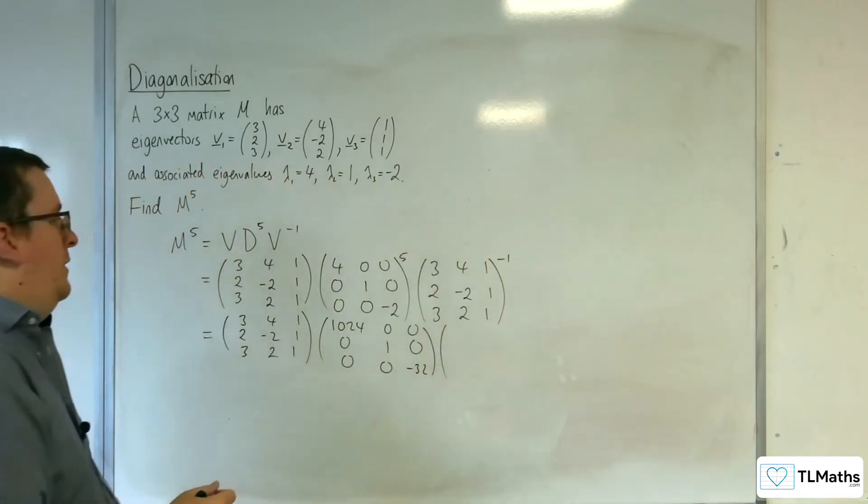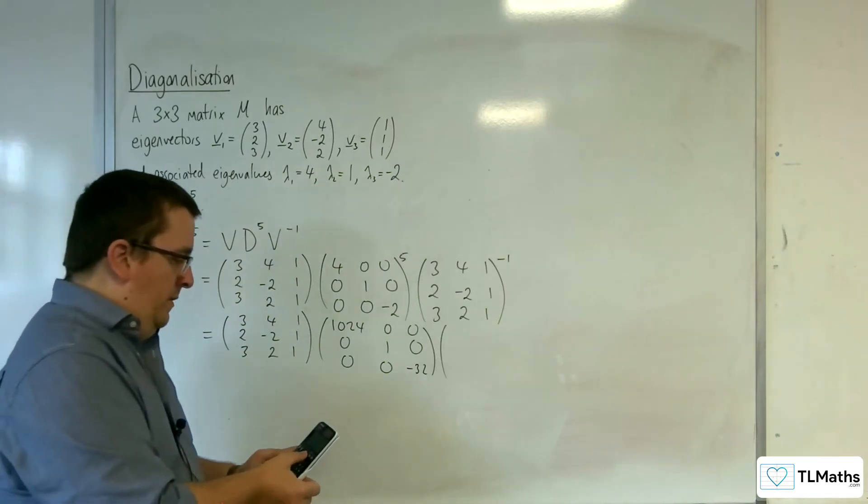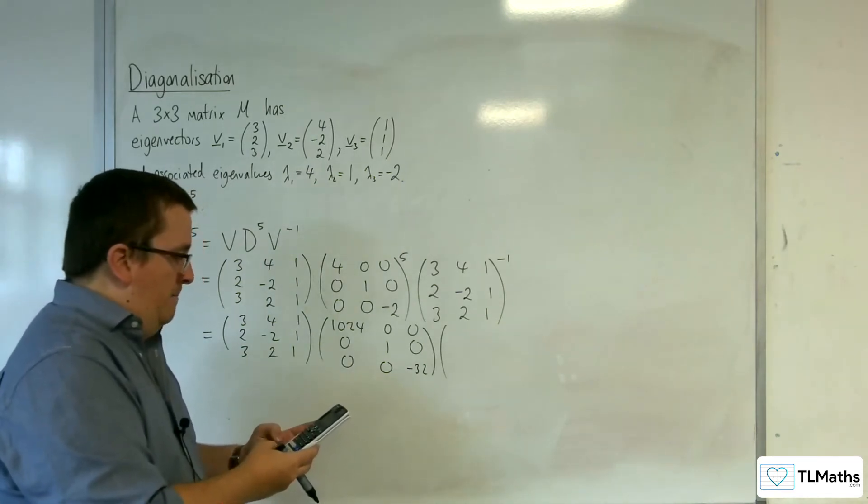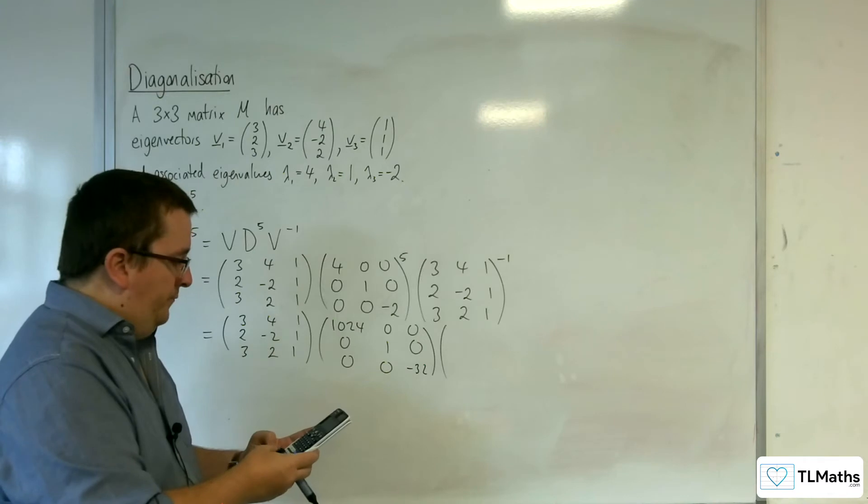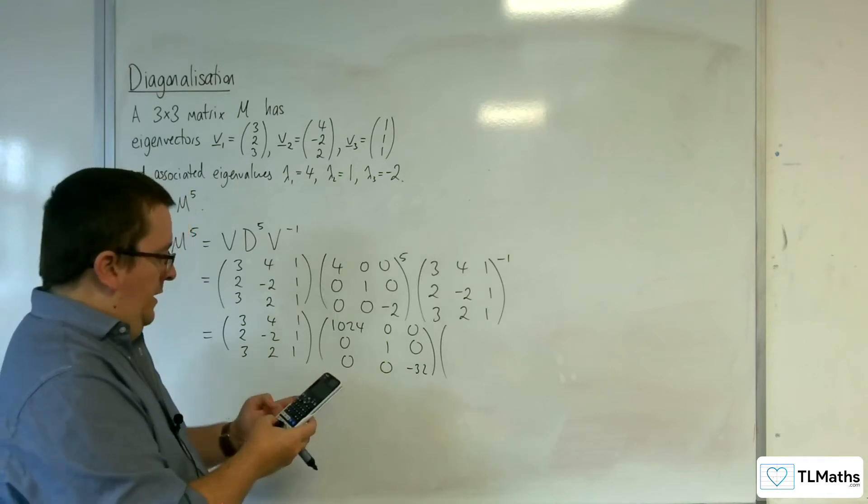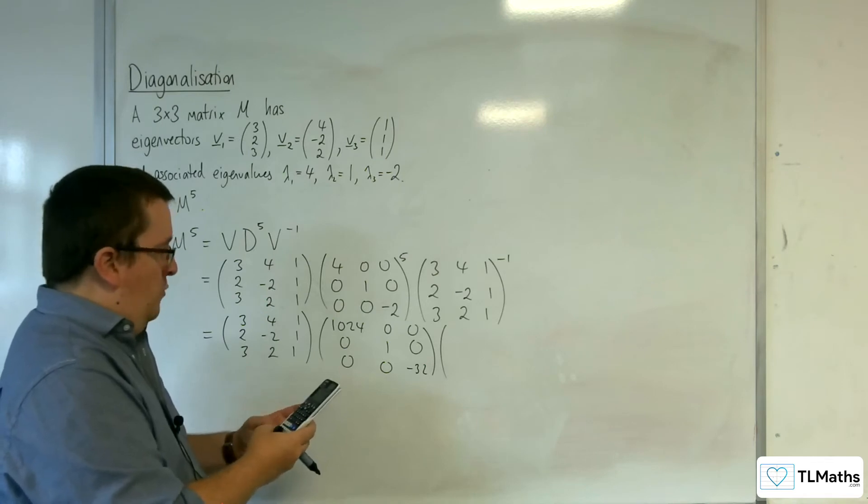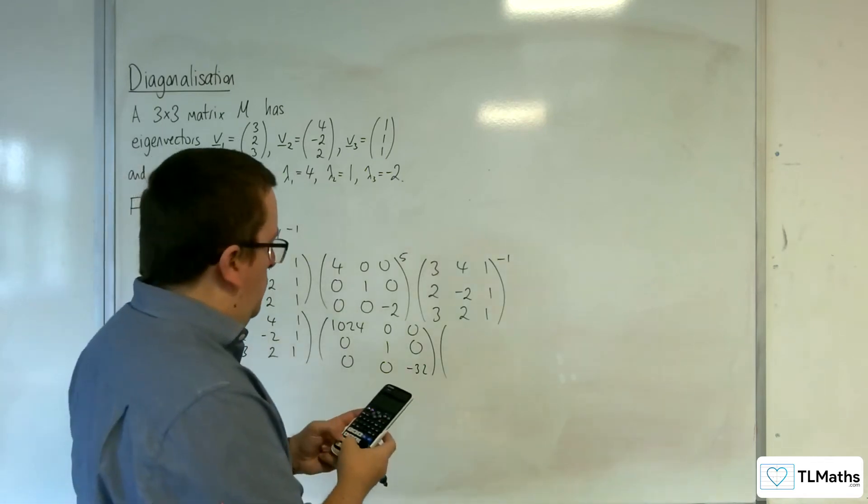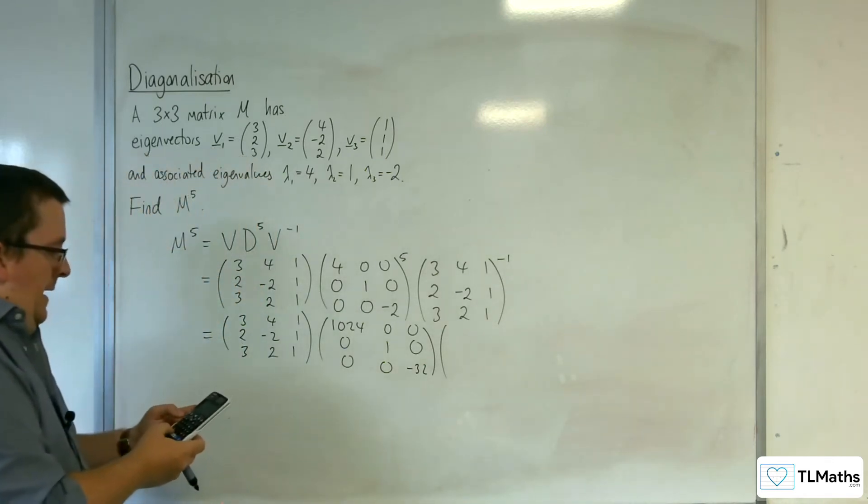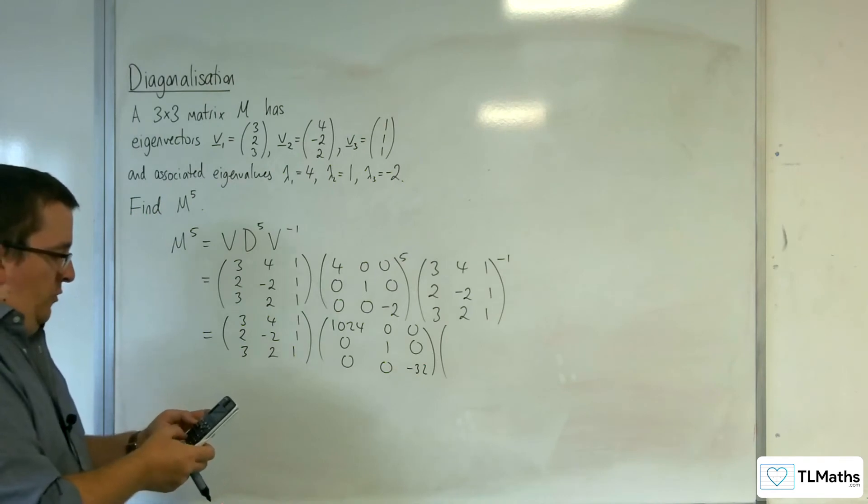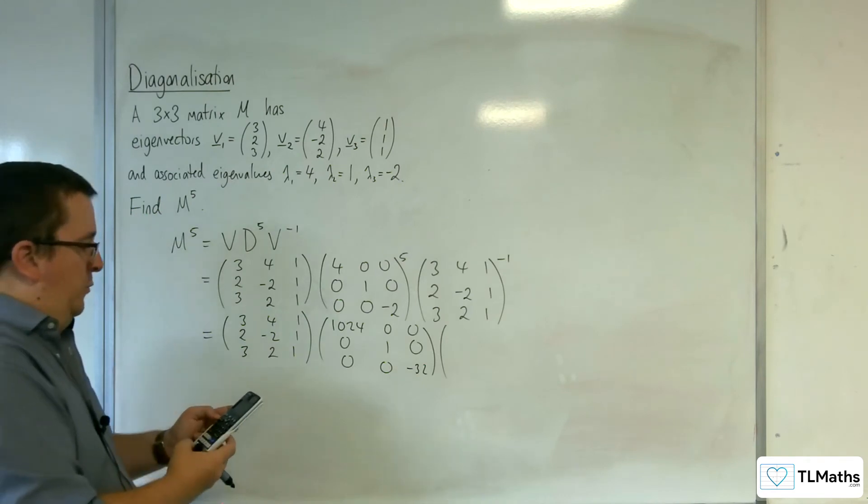Then we've got the inverse of this matrix, so using my matrix calculator, 3 rows, 3 columns, so we've got 3, 4, 1; 2, minus 2, 1; 3, 2, 1. And pick matrix A, do that to the minus 1,